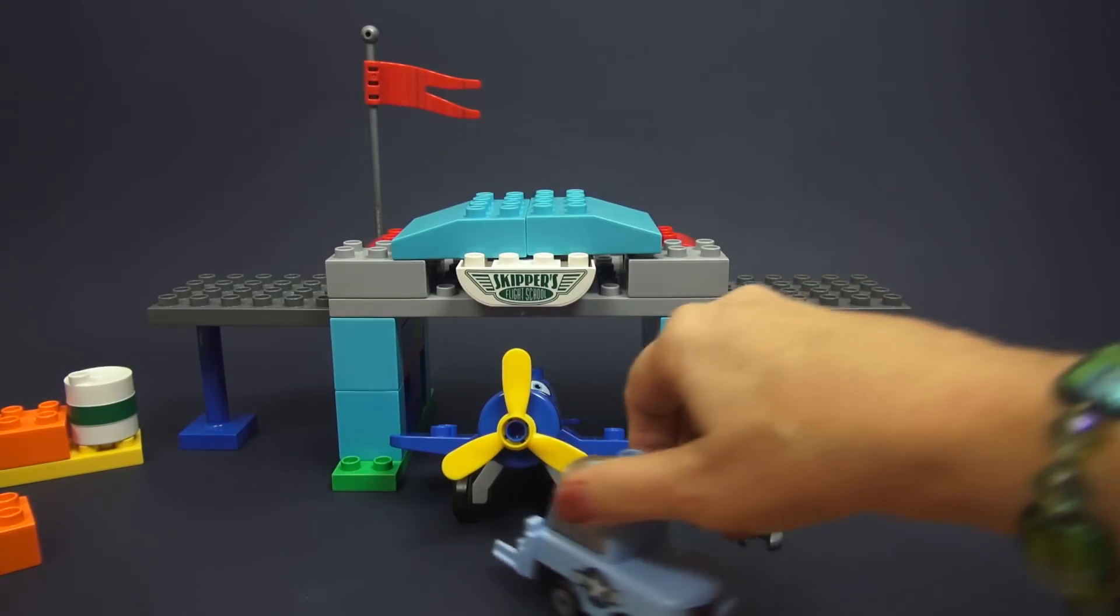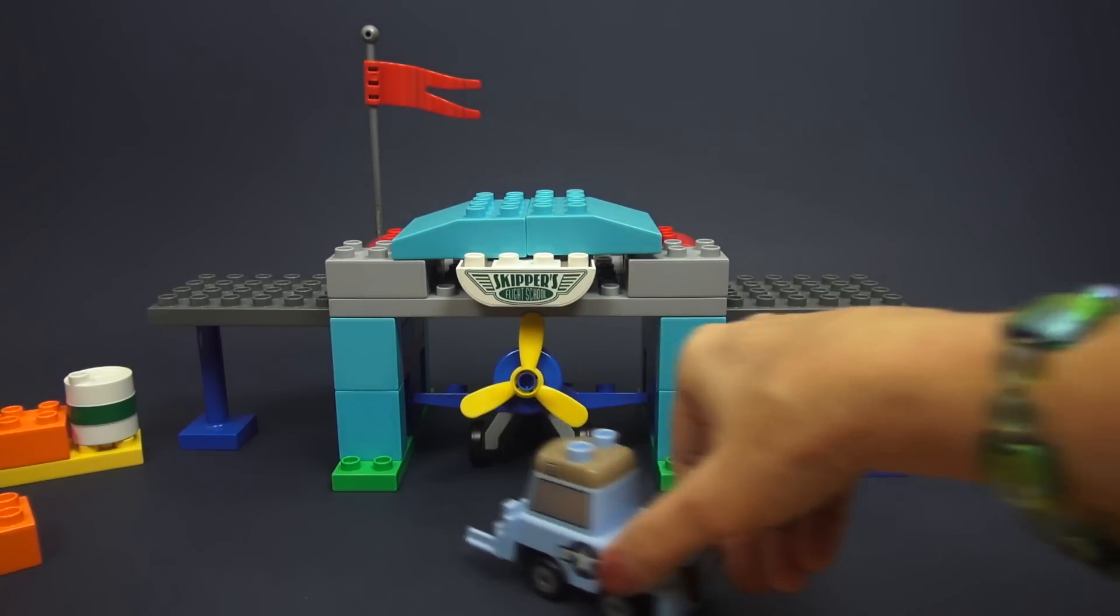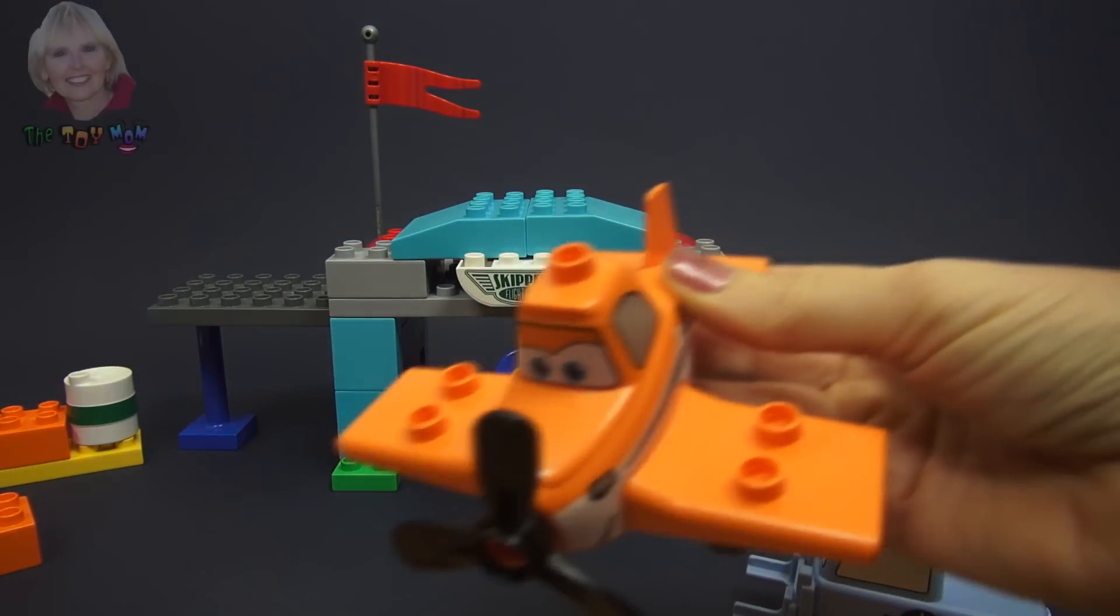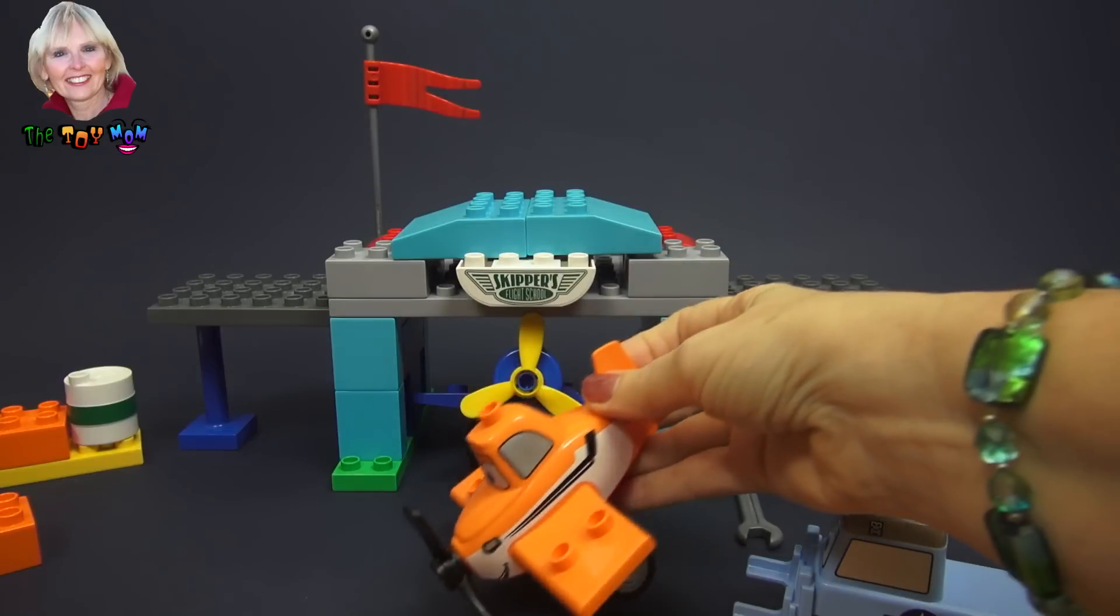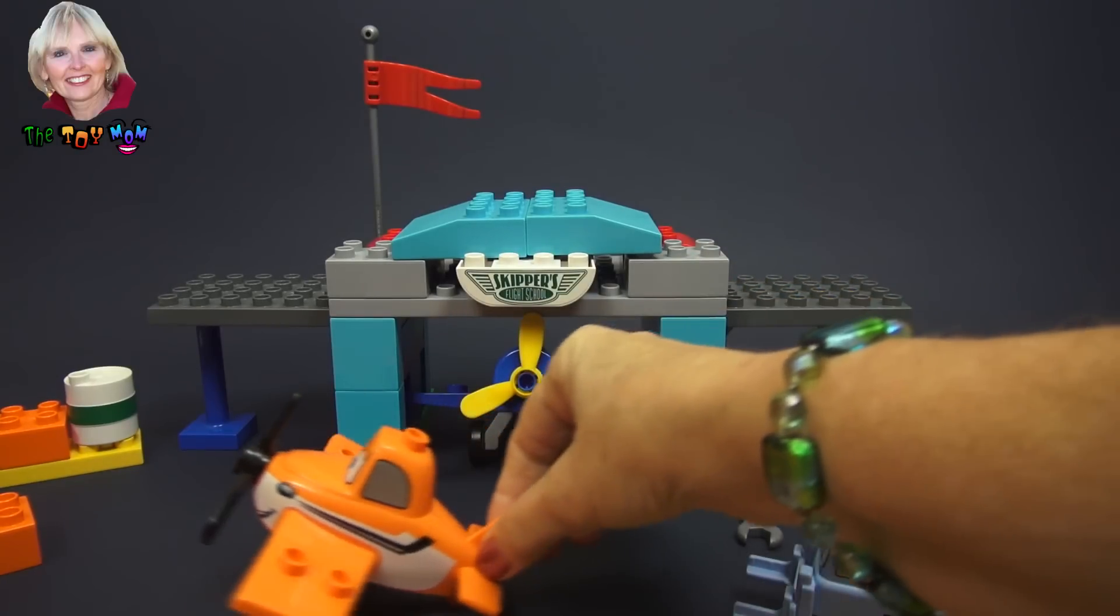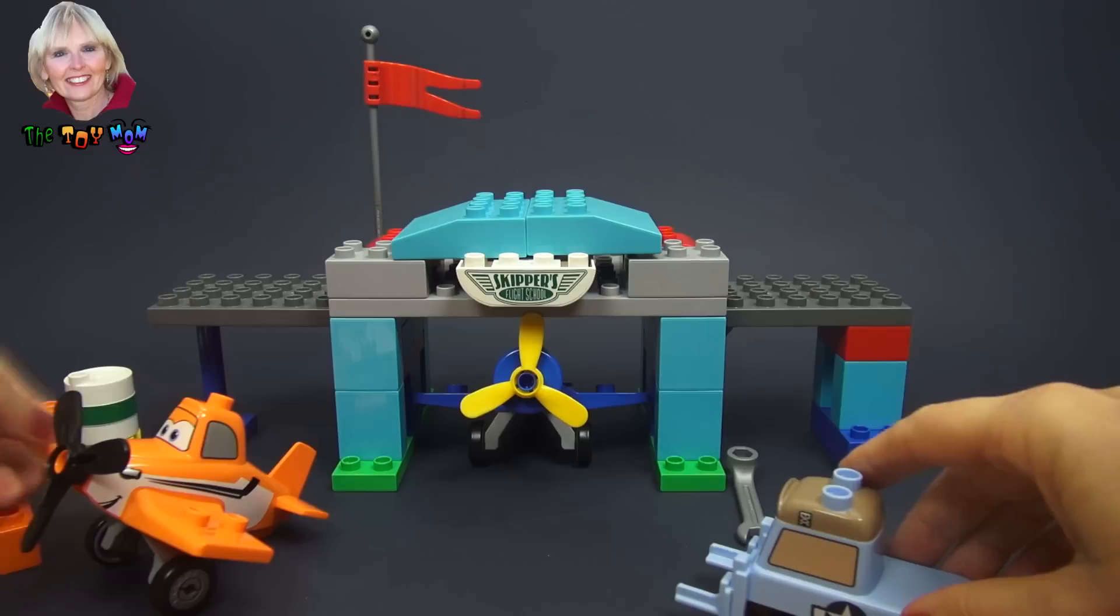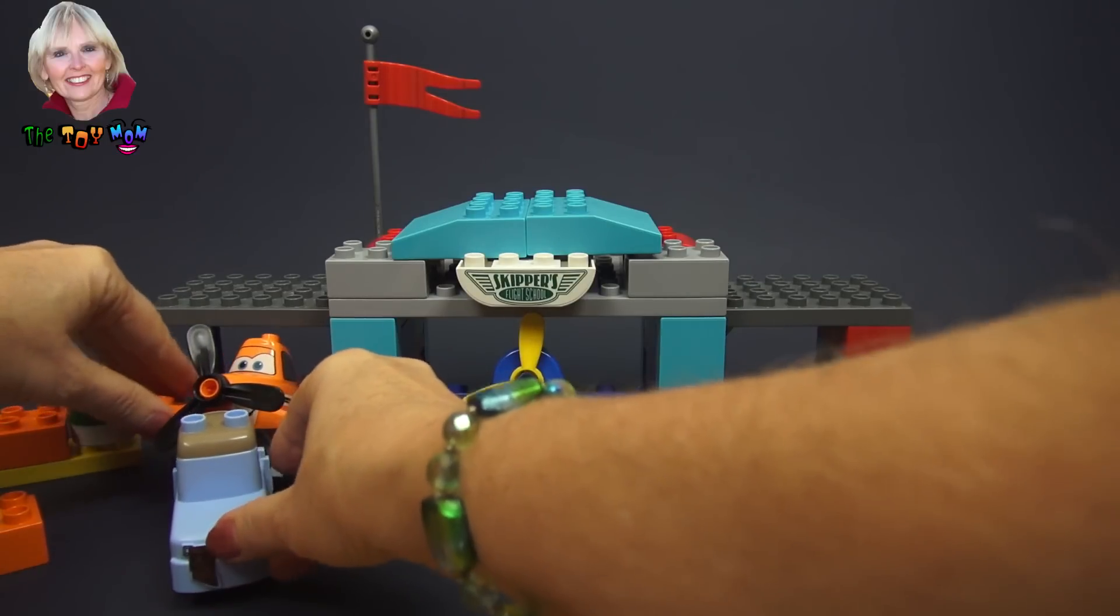So Skipper, we're gonna have Sparky help you get back in your hangar. There you go. And here's Dusty, he's coming in for a landing too. And he's always the trickster. Oh come on Dusty, you need to land, okay, watch out for Sparky. Okay, you can be over here today if you want to Dusty. So Sparky will help park you into this slot.